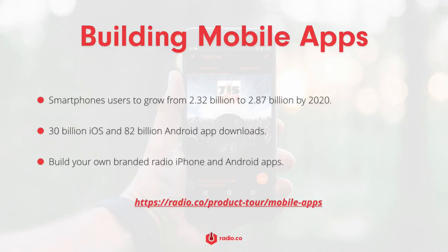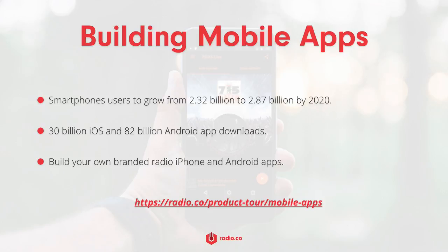In this day and age, every radio broadcaster — big or small — has their own iPhone and Android apps. There are around 2 billion smartphone users in the world, set to rise to nearly 3 billion by 2020, and on average a couple hundred million apps are downloaded a day on both the App Store and Google Play. Creating apps is simple using the Radio.co app builder wizard — you can match the look and feel of your station by uploading your logo and linking to your social media accounts so listeners can share your shows. There's no need to hire a developer or learn any code, and we'll submit your apps to the App Stores on your behalf.